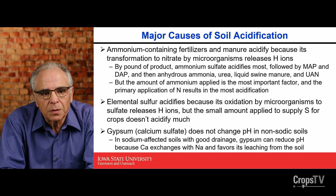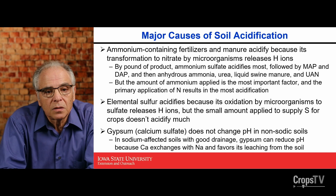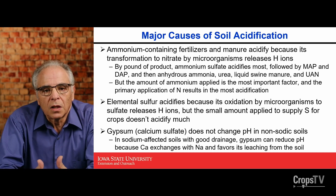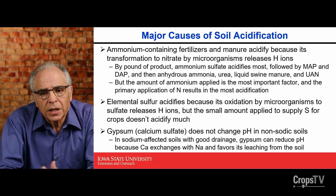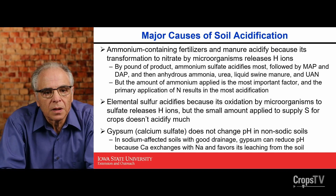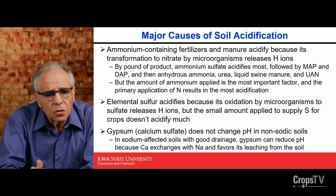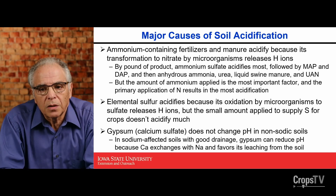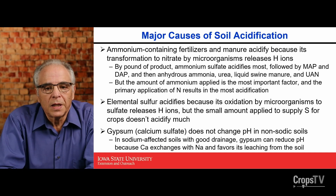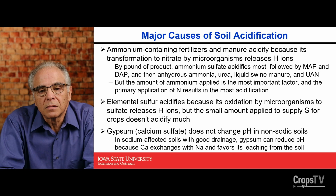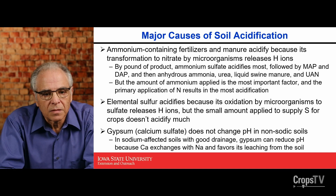But this is per pound. Normally the most important thing is the amounts of the fertilizer applied. Seldom is there too much nitrogen applied with ammonium sulfate, and the nitrogen applied with MAP and DAP is not that much. Elemental sulfur acidifies because its oxidation by microorganisms to sulfate releases hydrogen ions, but normally there is only a small amount applied to supply sulfur needed by crops — so the acidification is not significant at all.